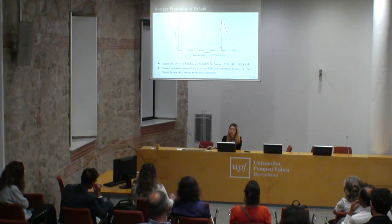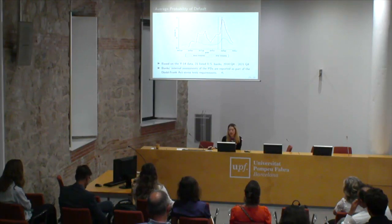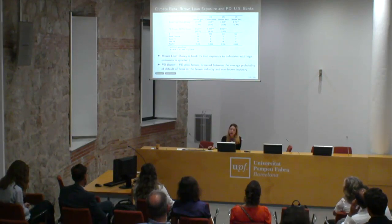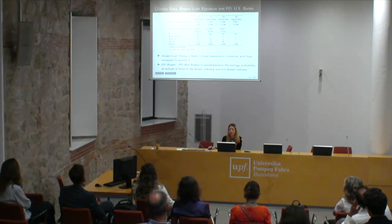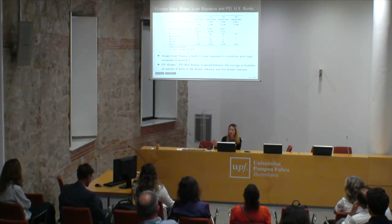The PD numbers come from banks' internal assessments reported as part of Dodd-Frank stress test requirements. We then regressed quarterly climate beta on the PD differential — the difference between brown and non-brown industry PD — and also included brown loan share. The PD differential explains time series variation in climate beta, and the brown loan share remains an important coefficient across specifications. This suggests both exposure to brown loans and the risk of brown loans help explain climate beta variations.